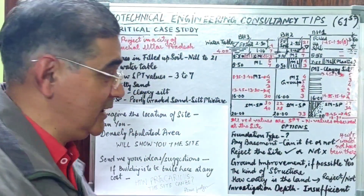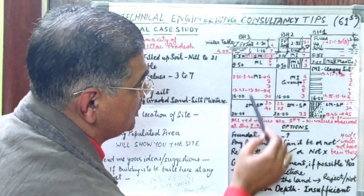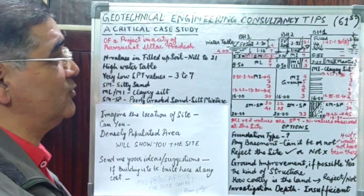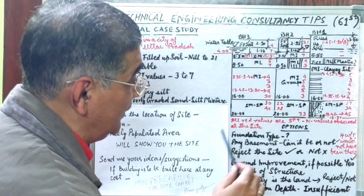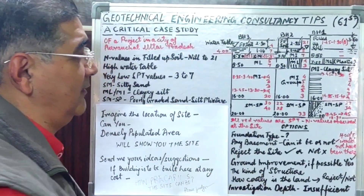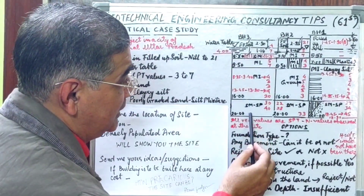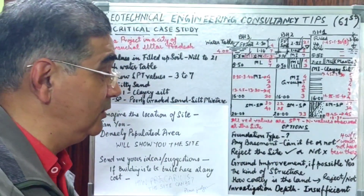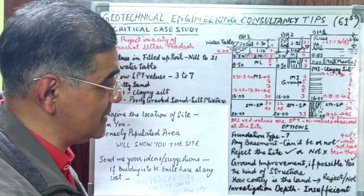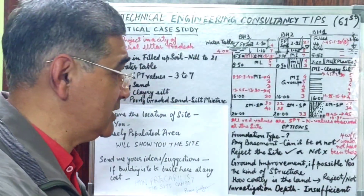Last but not least: the investigation depth was insufficient. We have loose strata prevailing up to 16 meters from natural ground level, which already consists of filled-up soil and a high water table. In the remaining four meters of explored strata, we cannot suggest anything — even if we decide to go for pile foundation. We need greater investigation depth in order to decide the kind of foundation. Otherwise the second best option is to first go for ground improvement and then suggest foundations.